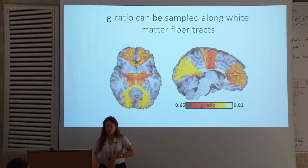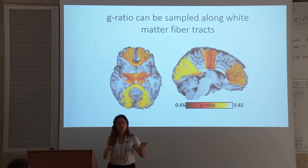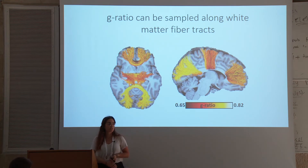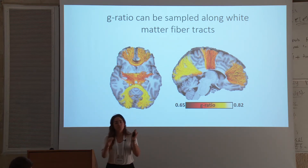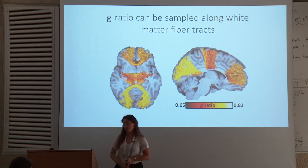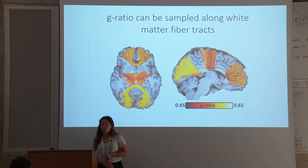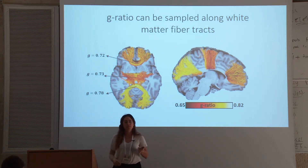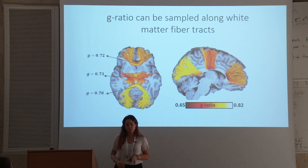Because we want to say something about conduction along fiber tracts, we sampled this g-ratio map along three tracts that we focused on. These are tracts connecting the frontal, motor, and occipital regions of the human brain. You can already see some variance between them, and we can average over sagittal regions, creating a single value per tract per segment.